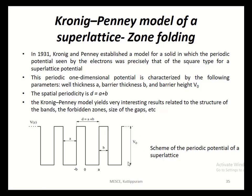In the superlattice, the periodicity is termed as D, which is equal to A plus B. Using this Kronig-Penney model, we can find out the structure of bands, the forbidden zones, size of the gap, etc. In order to find that, we will start with the Schrödinger time-independent equation.